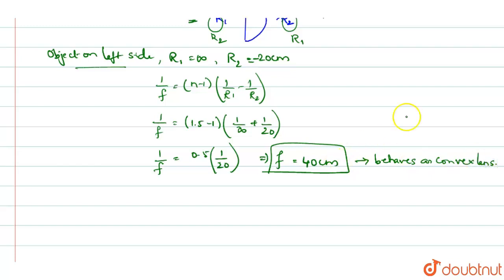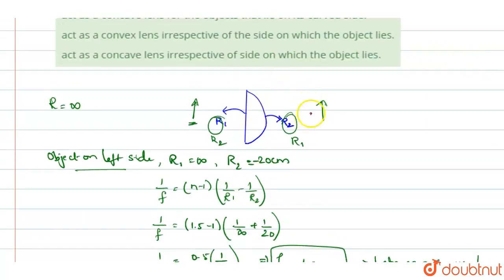This is the first situation with object on the left side. Next, we will take the object on the right side. Let's see what happens to the focal length when we place the object here.